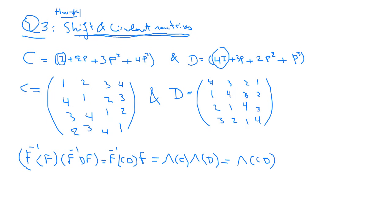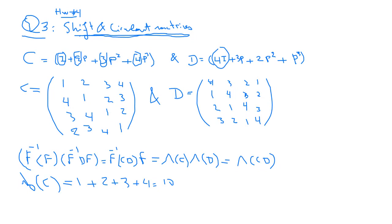The first step is to determine the eigenvalues of C. According to the formula, lambda 0 of C is the sum of the components C0, C1, C2, and C3. So we have 1 plus 2 plus 3 plus 4, which equals 10. This is the first eigenvalue. It is written as C0 plus C1 plus C2 plus C3 — go back to the lecture notes where it is clearly written.